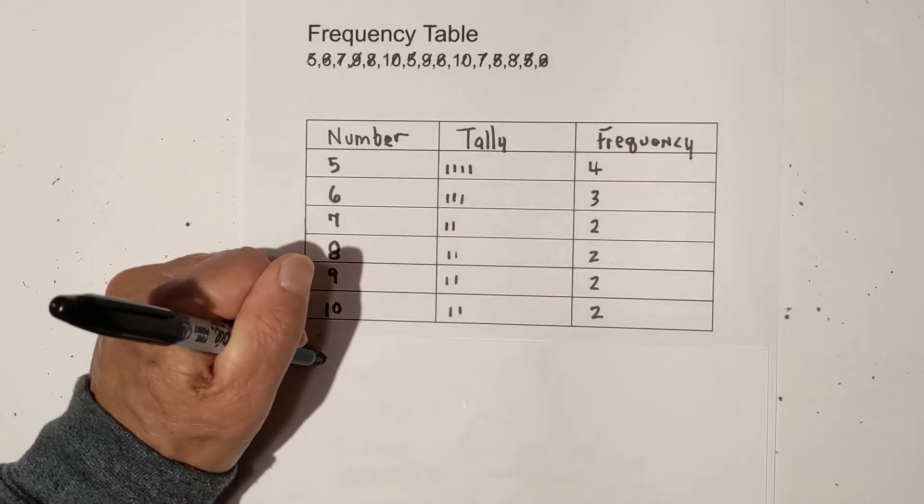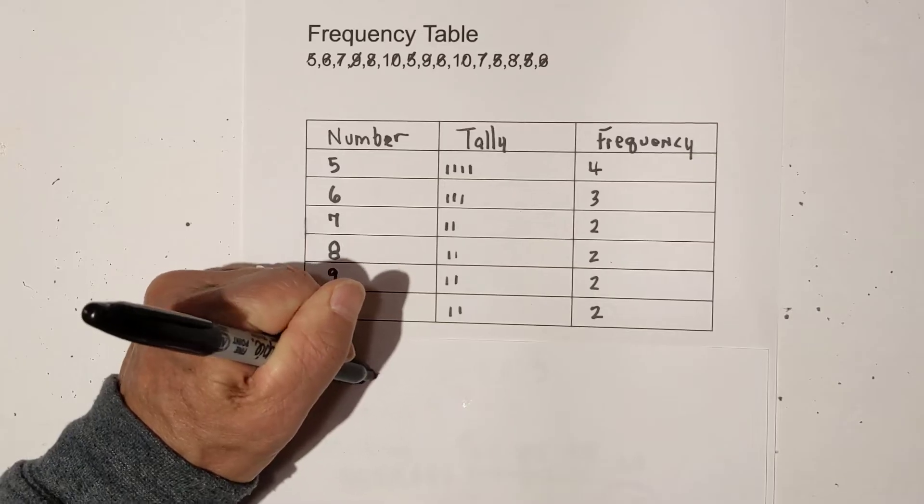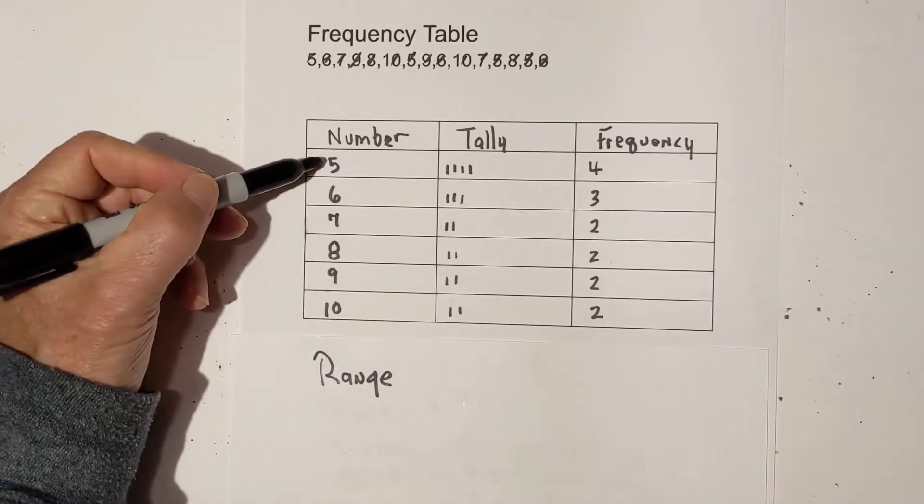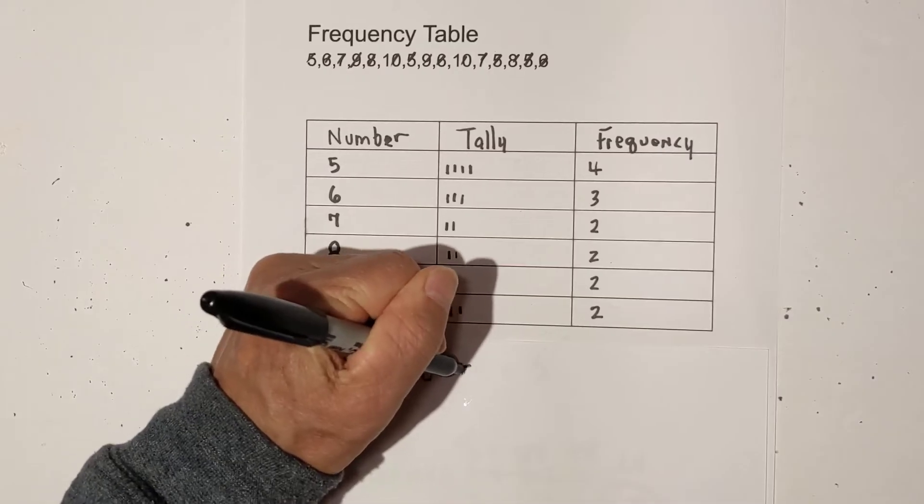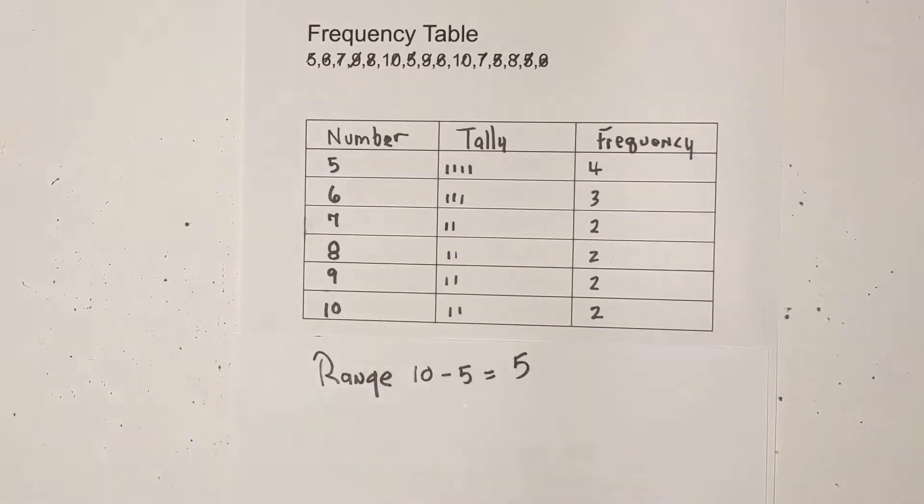Okay, the range is just the difference between the high and the low. And so the low number is 5, the high is 10. So let's just go 10 minus 5 equals 5. So the range is pretty straightforward.